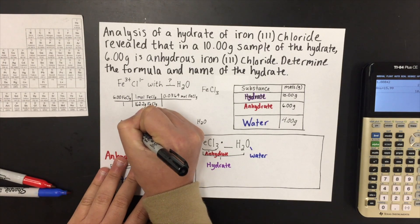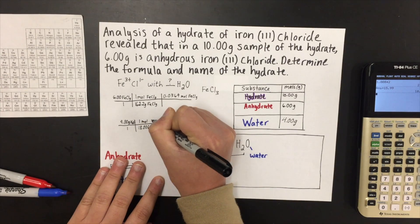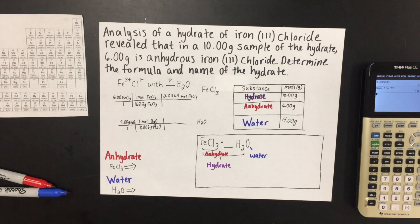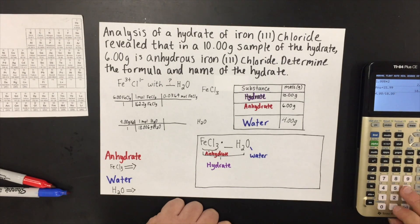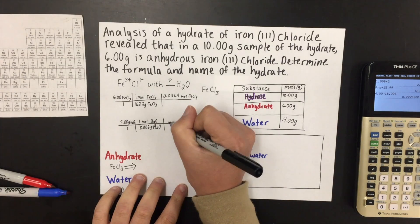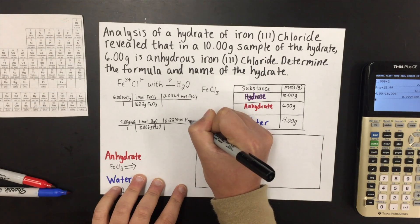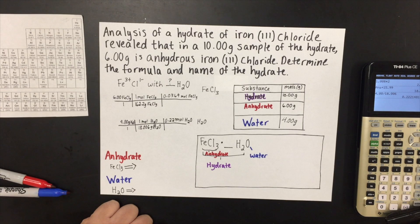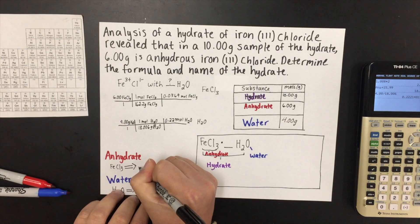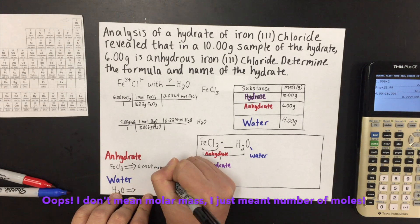Since 4 grams of water are present in this sample and one mole accounts for 18.006 grams, we do 4.00 divided by 18.006. Our answer is 0.22 moles of water. Now at this point we have the moles for both components; however, in a hydrate formula we must have whole numbers in the final answer.